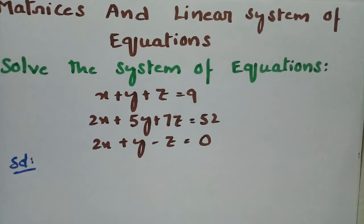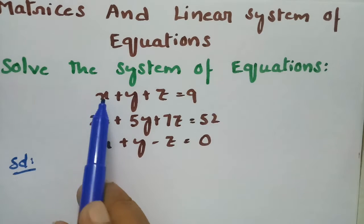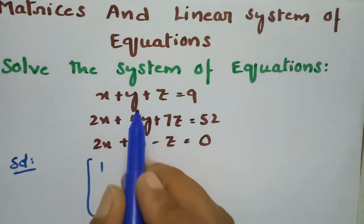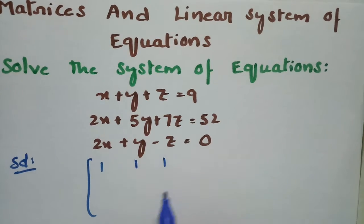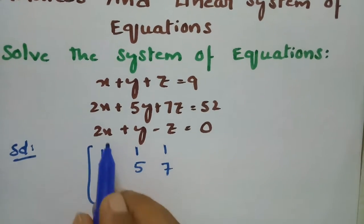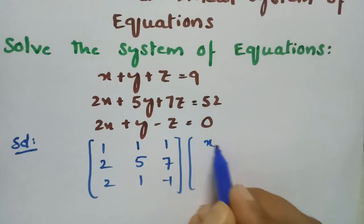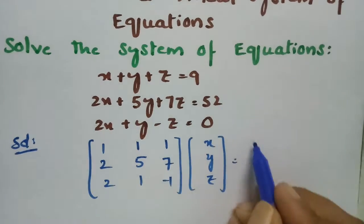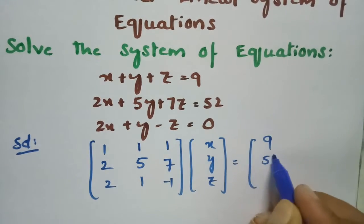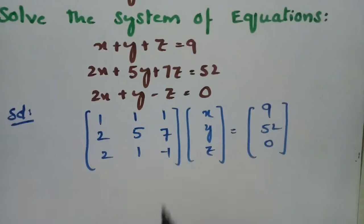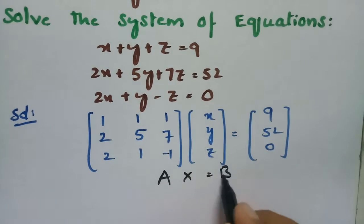First of all we have to check whether the system is consistent or inconsistent. The system of equations can be written in matrix form — the coefficients of x, y, z give us a 3x3 matrix with values including 1, 1, 1 in the first row; 2, 5, 7 in the second; and 2, 1, minus 1 in the third. The unknowns are x, y, z equal to the column matrix 9, 52, and 0. This equation can be written as Ax equals B.